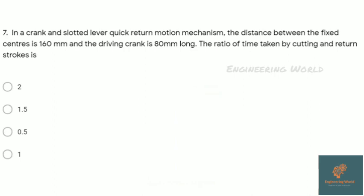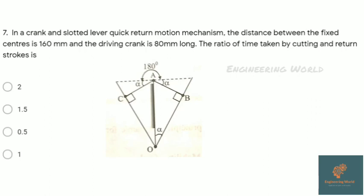In a crank and slotted lever quick return mechanism, the distance between fixed centers is 160mm and driving crank is 80mm. The ratio of time taken by cutting and return stroke is? Here is the return stroke and this one is the cutting stroke. As time is proportional to the angle turned by that slider, the quick return ratio is the ratio of time taken by cutting to return stroke.